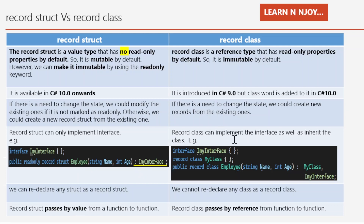(4) Record struct can only implement an interface, not inherit a class. Record class can implement an interface as well as inherit from another record class. (5) We can redeclare any struct as a record struct, whereas we cannot redeclare any class as a record class. (6) Record struct passes by value from function to function, whereas record class passes by reference.